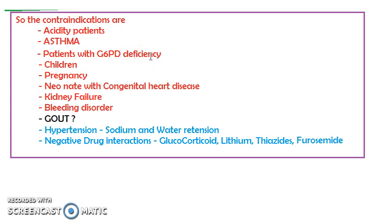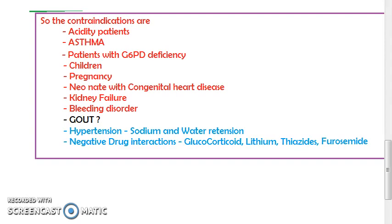In patients with G6PD deficiency you should not give aspirin, because NADPH will be less and there can be hemolysis. Aspirin can also lead to hemolytic anemia.